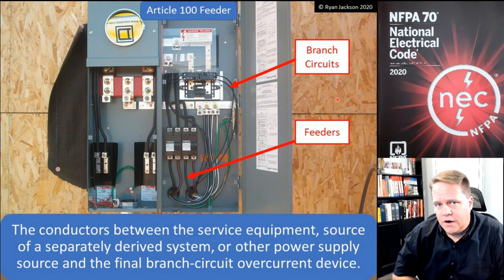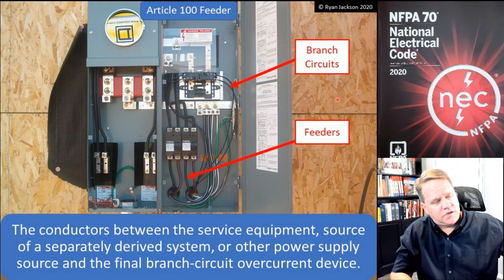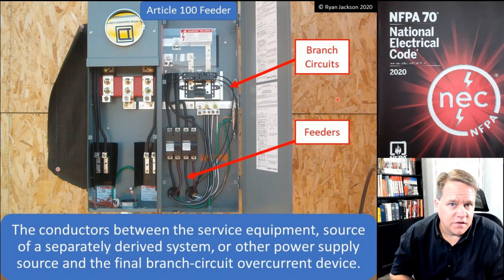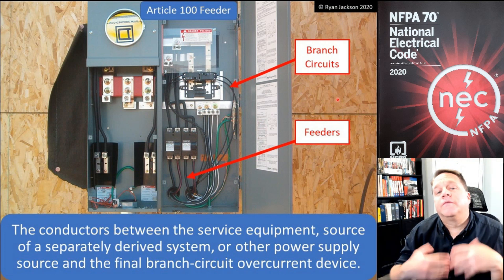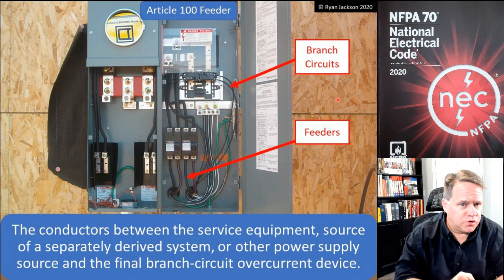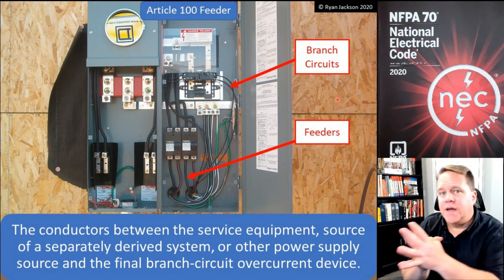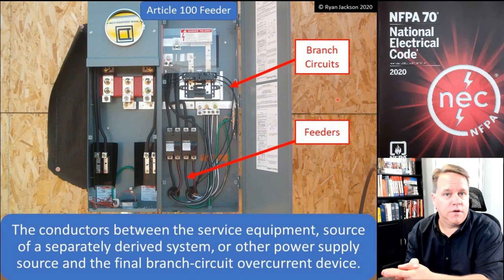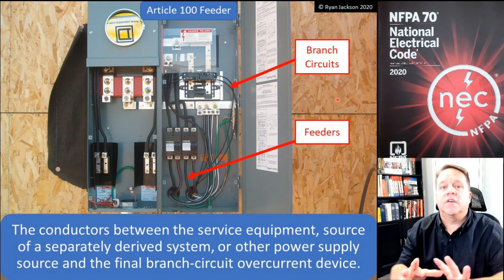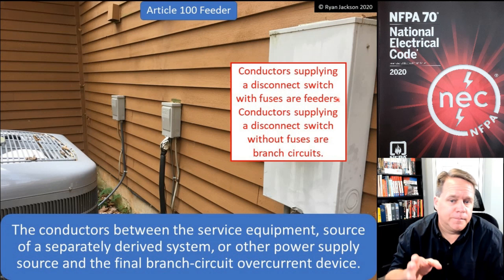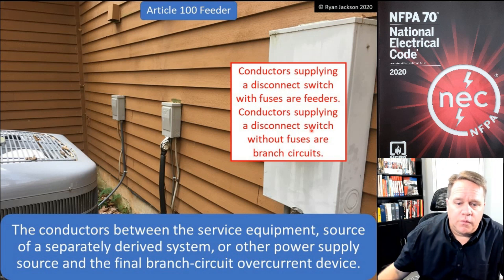A branch circuit starts at the last breaker or fuse and ends at the utilization equipment. Everything between the service disconnect and the branch circuit overcurrent devices is a feeder circuit. So a feeder circuit usually starts at a breaker or fuse and ends at a breaker or fuse — that's how it typically works.